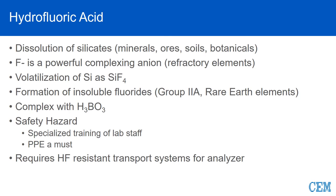Hydrofluoric acid is the one acid most people do not like to work with, but unfortunately if you're going to digest silicates, you'll need it. Fluoride is a very powerful complexing ion and will strip away the bonds to allow silicon to be digested. It does volatilize silicon as silicon tetrafluoride, making it difficult to analyze for silicon. It does form insoluble fluorides with group 2A and rare earth elements, but we can complex those with boric acid at the end to bring them into solution. Specialized training and appropriate PPE are a must when working with HF.